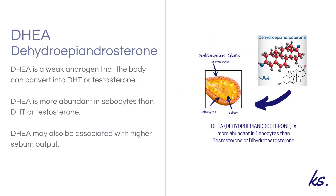Although DHEA is a weaker androgen, it's still significant as it can be converted into DHT or testosterone, and is found in great abundance in sebocytes. In fact, DHEA is found in greater abundance in sebocytes than either testosterone or dihydrotestosterone. DHEA is also thought to be associated with a higher sebum output.